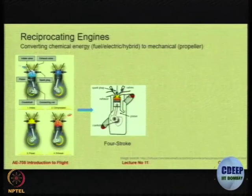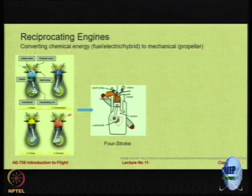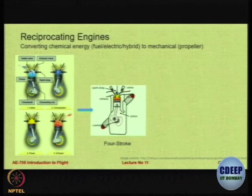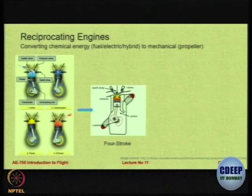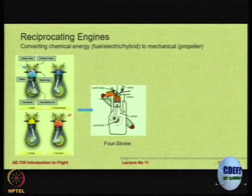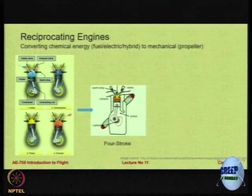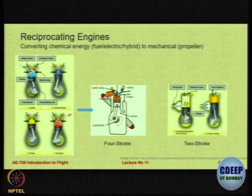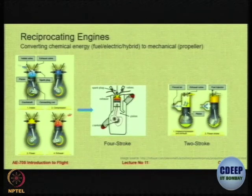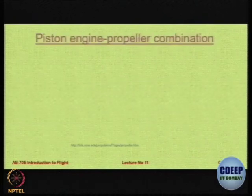A reciprocating engine comes to us from mechanical engineering. Essentially what it does is convert the chemical energy present in a fuel — it could be liquid fuel, gaseous fuel, and today we also have hybrid and electric — into mechanical energy through a propeller. There are two basic types: two-stroke and four-stroke, but we also have other types like the Wankel engine. Let us have a look at how this combination works.